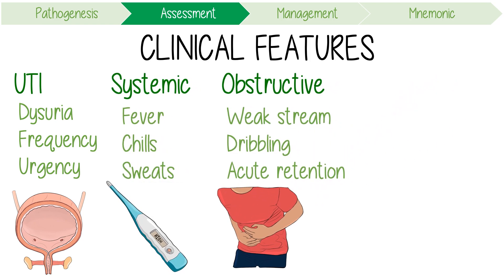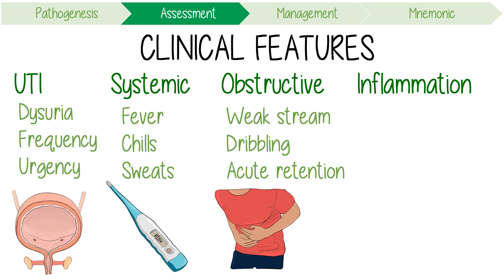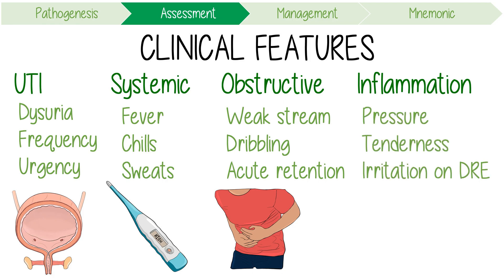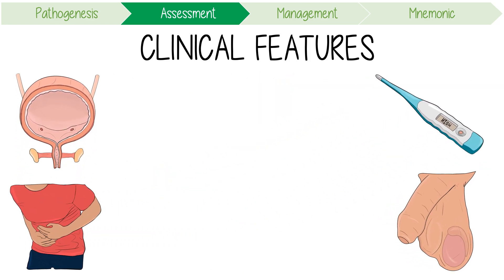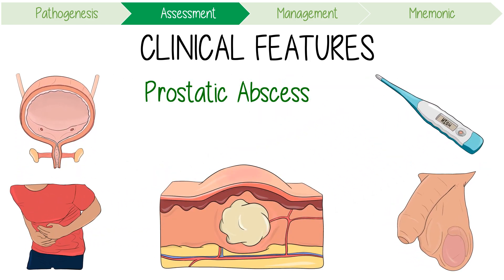Signs of local inflammation include pelvic pressure, perineal tenderness and prostate irritation on digital rectal examination. Some patients also complain of pain in the penis or in the lower back. One rare but important complication is a prostatic abscess, which will make patients complain of severe perianal pain.